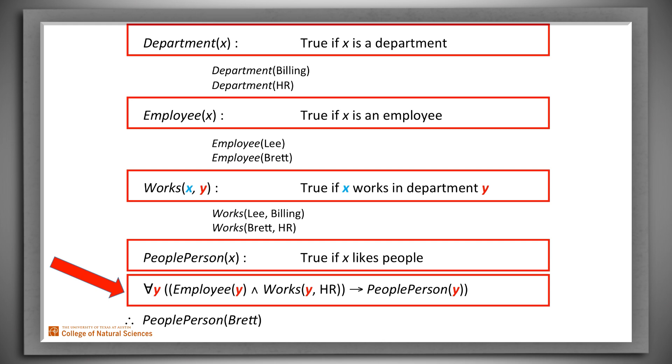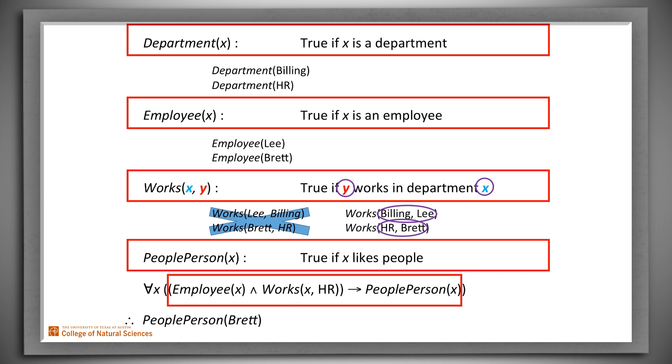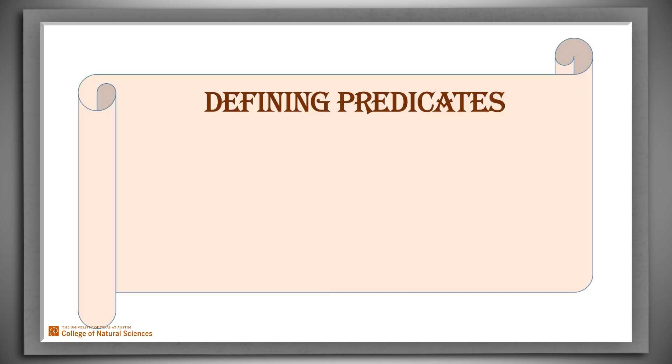Now let's just see what would happen if we had not used all our definitions and our premises consistently. This time we've swapped the definition of Works. It's true of Y, the second argument, works in X, the first argument. So we had to rewrite the premises about it, and we have Works Billing Lee and Works HR Brett. Now let's see if we can prove anything. Oops, we can't. Since we didn't change everything else we've asserted, we're stuck. We have no premises that assert Works X HR for any value of X. So we can't use our claim that if X works in HR, then X is a people person. So remember,